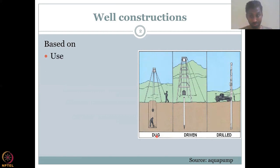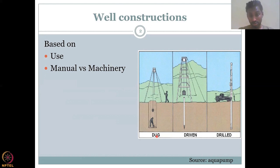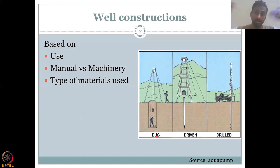Well construction is also based on use — how much water you need for agriculture, domestic, or industry. Based on that, the well construction type differs. It also differs between manual versus machinery. When machinery is used, there is a lot of money involved to make the well and extract water. Manual methods are much cheaper — it's mostly your labor cost. The type of casing material used is also very important to prevent material from falling in.